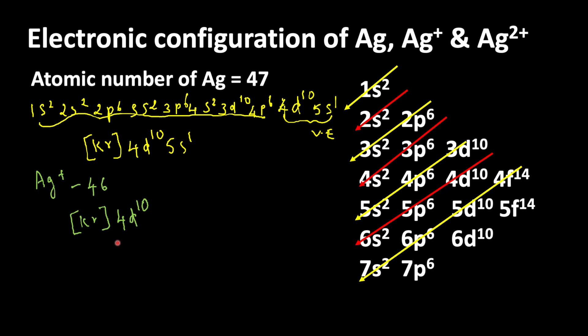Let us write Ag 2 plus ion. Ag 2 plus ion is formed when neutral silver atom loses 2 electrons. Total number of electrons in silver is 47 minus 2, which equals 45 electrons in Ag 2 plus. Let us use the same shorthand notation.